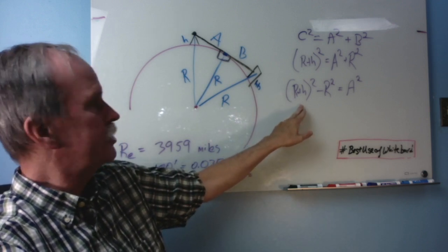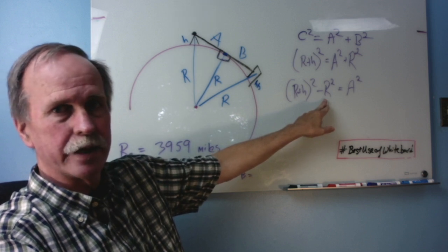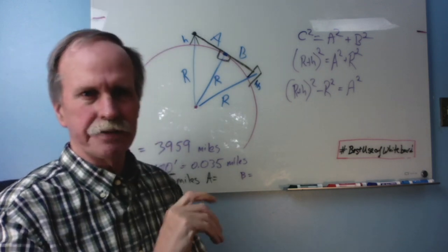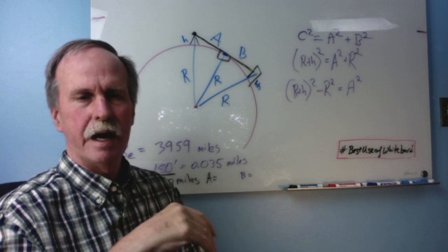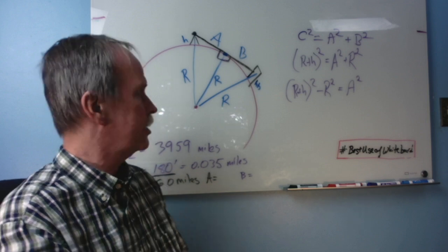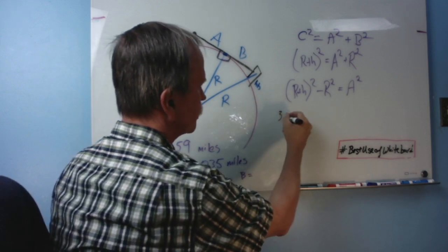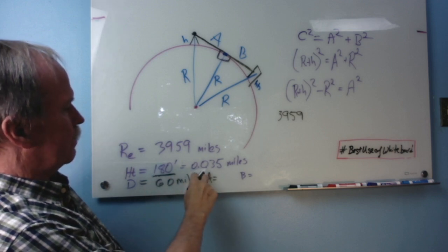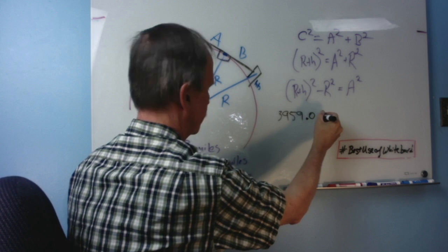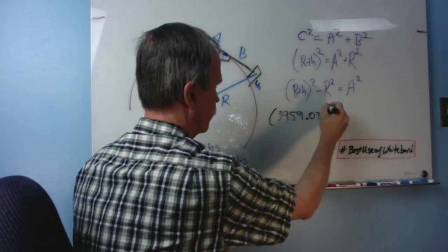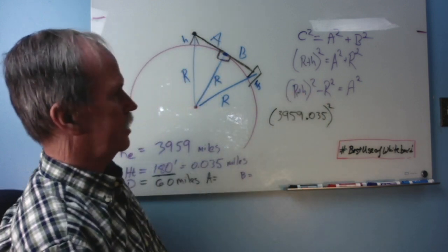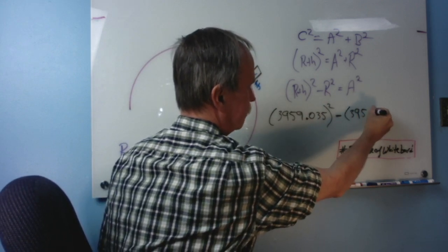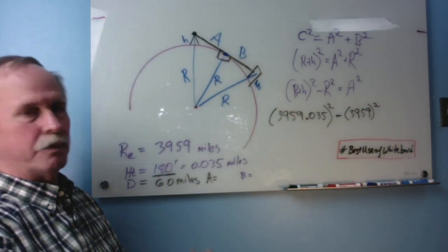And the way we're going to do that is we're going to take the hypotenuse squared and we're going to subtract the radius squared from it and that'll give us A squared. So let's go ahead and put the numbers in. Now just for convenience, I've not converted this to feet. I've left it in miles and we're going to get an answer in miles. So the radius of the earth is 3959. The height of our observation 180 feet is 0.035 miles. So that's R plus H and we're going to square it. Then we're going to subtract 3959 squared. And that will give us A squared.